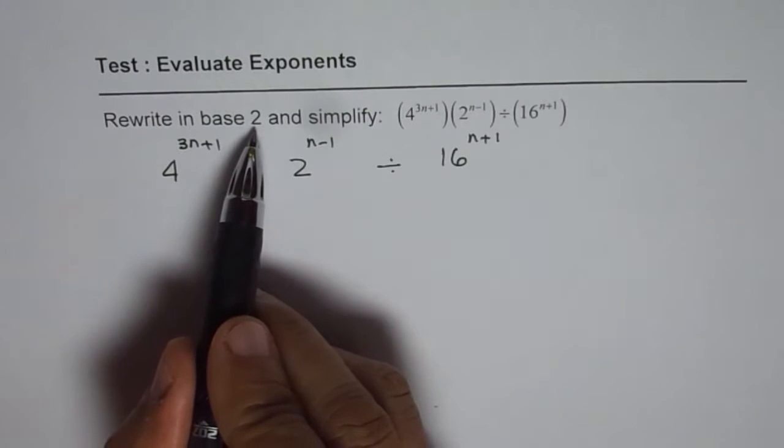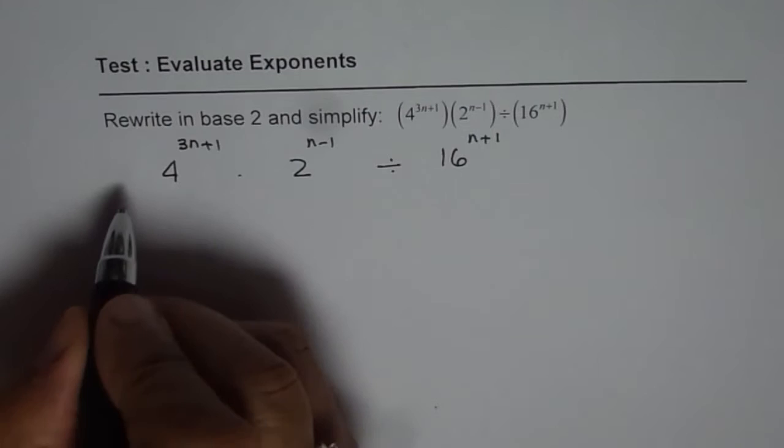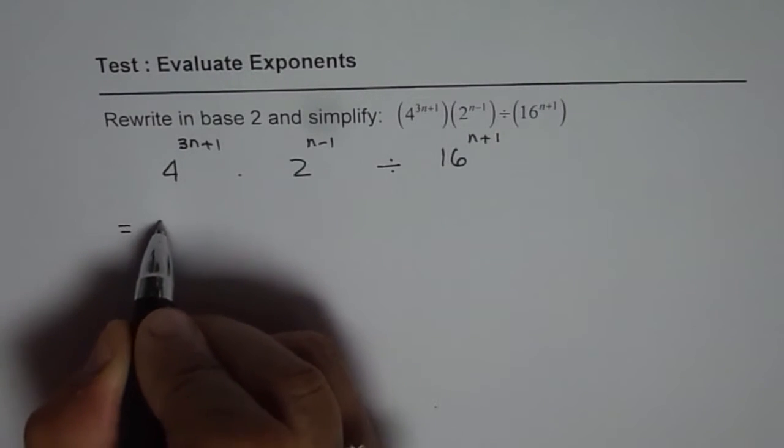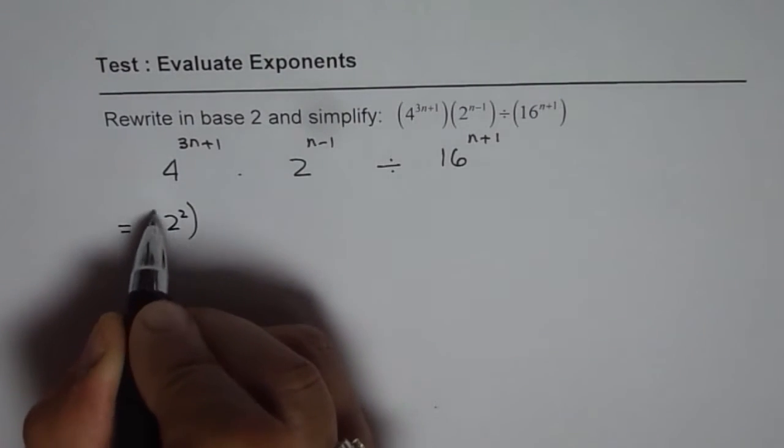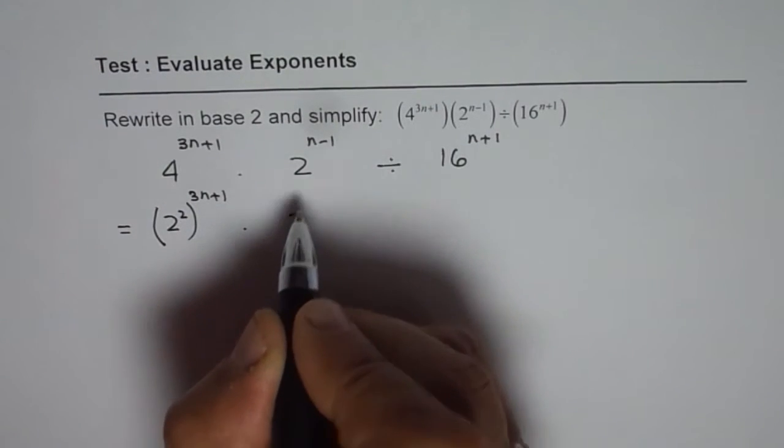We need to write them as base 2. Now what is 4? 4 is 2 squared. So we can write this expression as 2 squared to the power of 3n plus 1, and 2 is okay for us.